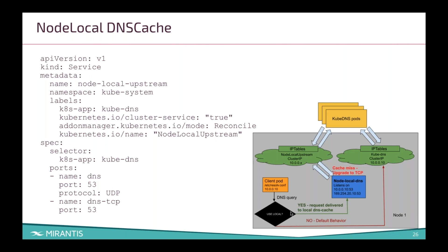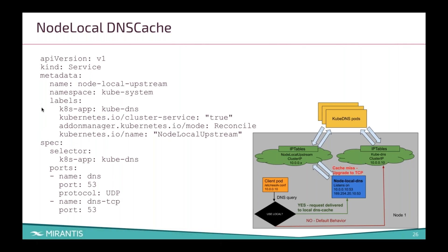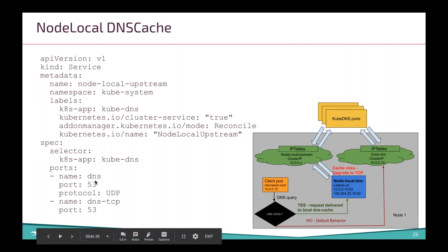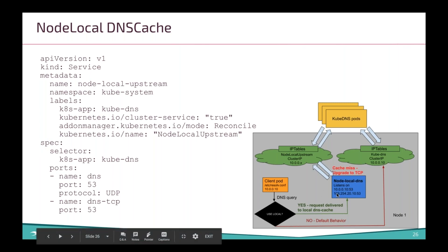You get an idea of what the architecture looks like here. Under the service spec you'll see two ports: DNS and DNS TCP, both on port 53. And under local DNS, we've got our local IP and then the additional IP that was added by all of this.